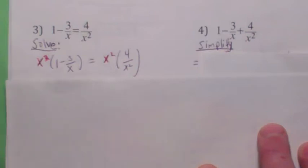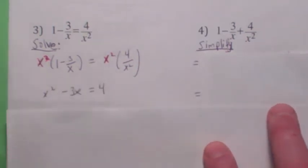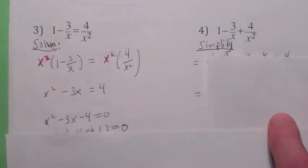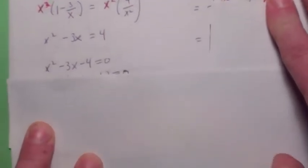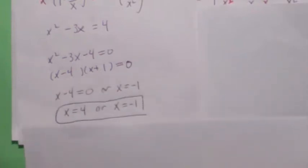In this case the LCD is x squared. So you get x squared minus 3x equals 4, and you solve the quadratic equation. There are many different ways to solve quadratic equations. Let's try solving by factoring — always try that first, I would suggest. And then you end up getting x equals 4 or x equals negative 1.